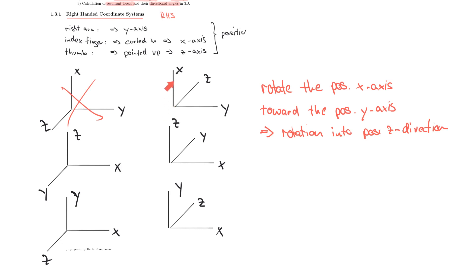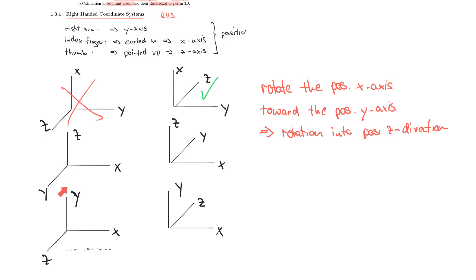In the next system, similar to the first but with positive z pointing into the plane, rotating from positive x to positive y also moves into the plane — so that gets a checkmark as a right-handed coordinate system. In the following system, imagining the bottle on this tabletop, rotating from positive x to positive y moves the bottle cap downward, so this is not a right-handed coordinate system.